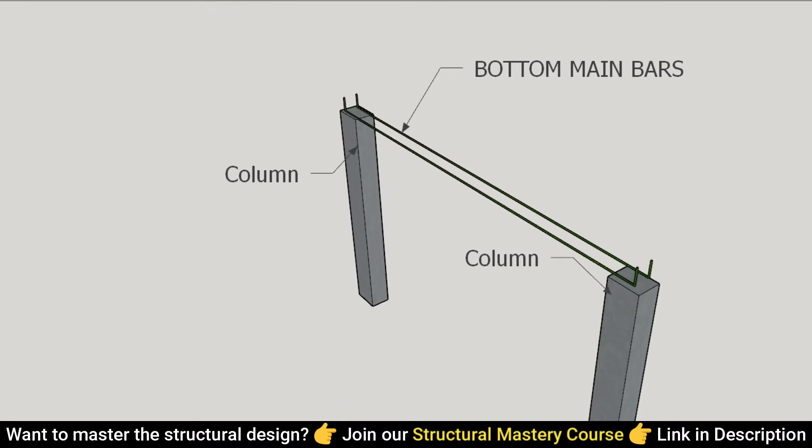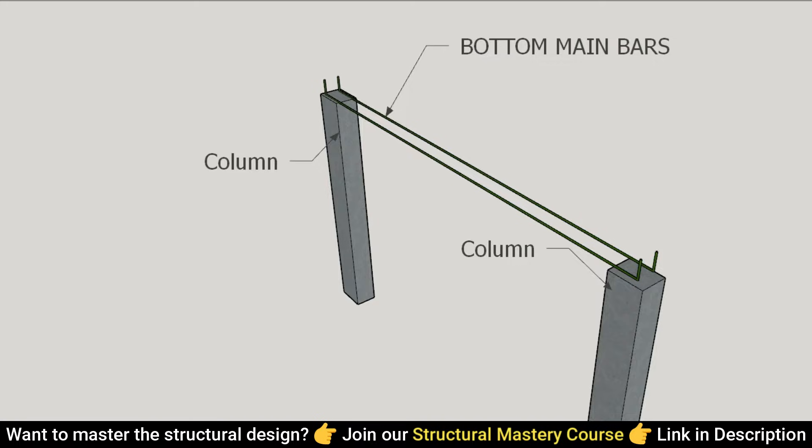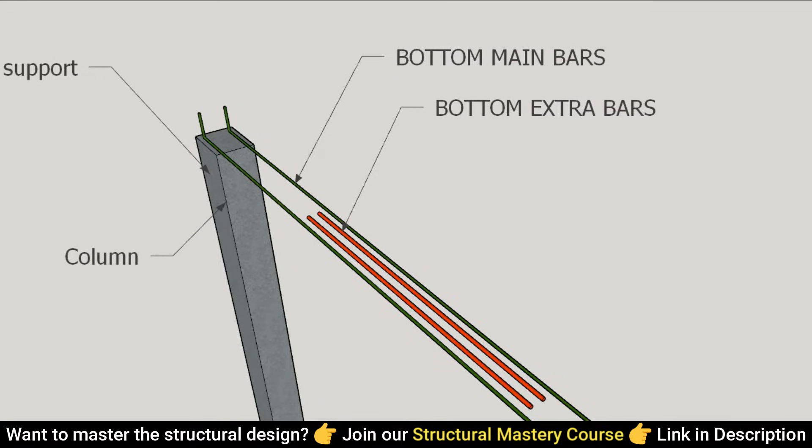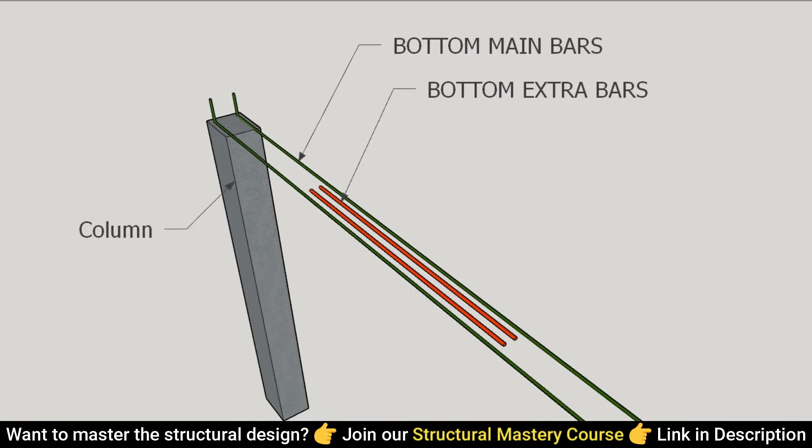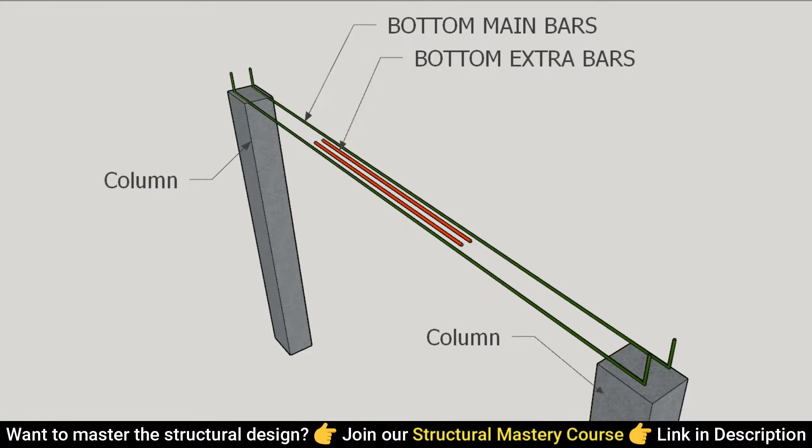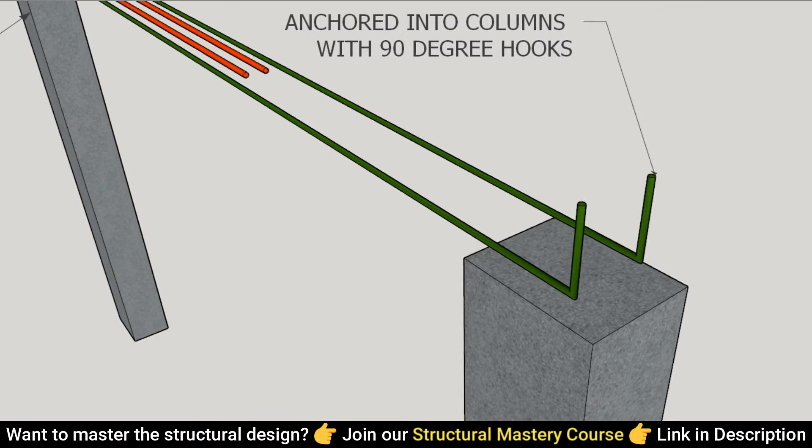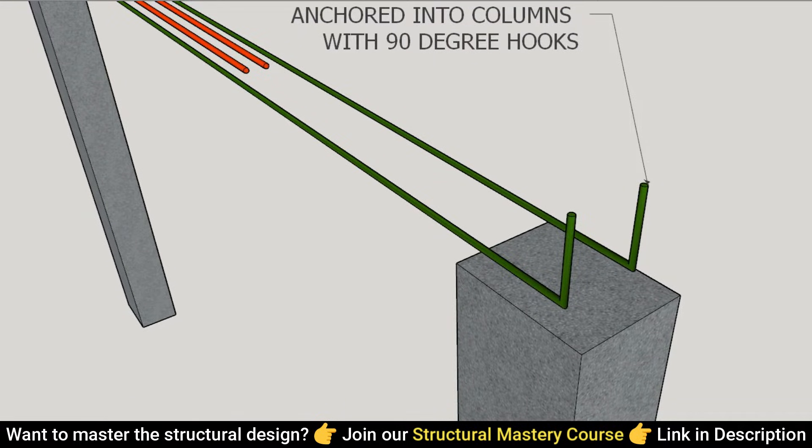In a single span beam, we begin with bottom reinforcement which serves to counteract bending stresses and prevent tension cracks at the beam's lower section where concrete is vulnerable to tension. These bottom bars extend between columns and feature 90-degree hooks at their ends for secure anchoring.